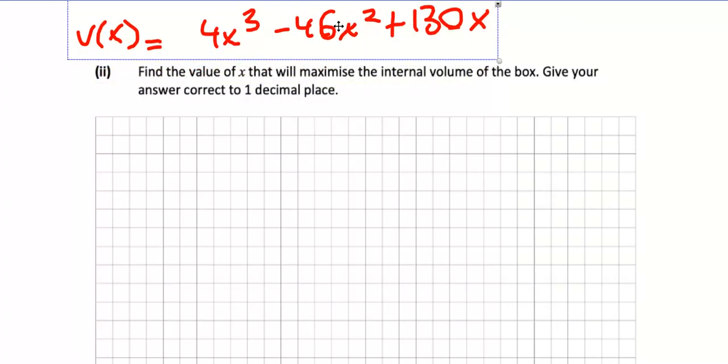Now find the maximum value. What happens at a maximum? The first derivative equals zero. The reason why maximums and minimums of the first derivative equals zero is the slope is zero at the top of the mountain or bottom of the valley. So first derivative, what do we get? We differentiate this: 12x squared minus 92x plus 130.